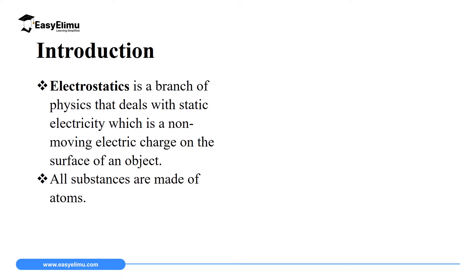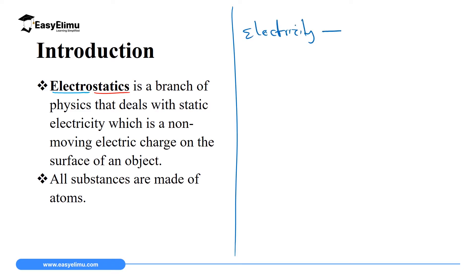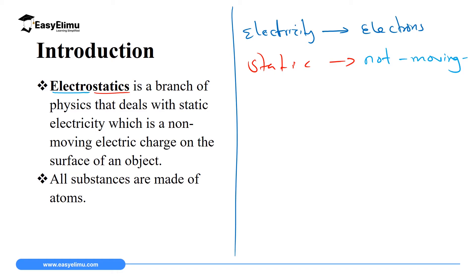The word electrostatics comes from two words. The first is electro, and the second part is static. The word electro comes from the word electricity, and electricity is made up of electrons — or it comes from the word electrons. The second part, static, comes from the meaning 'not moving.' So if we paraphrase the title, it becomes a study of electricity which is not moving. The word electrostatic simply means electricity which is not moving.